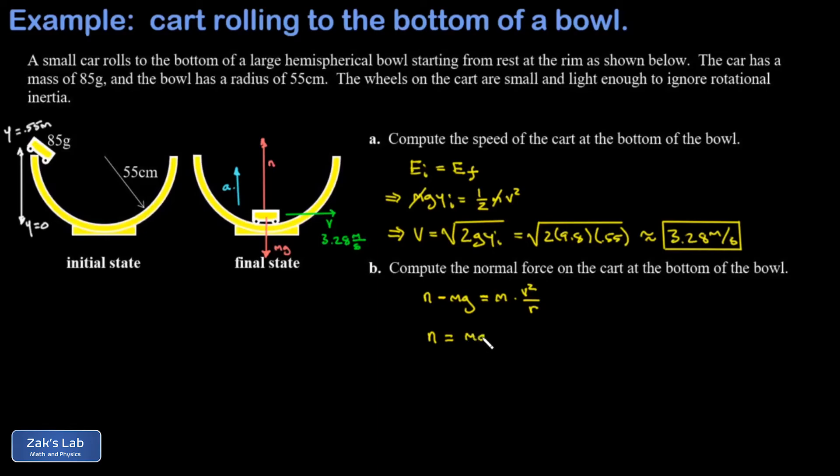I get n is equal to mg plus mv squared over r. We'll go ahead and factor the m out of this to get a nice symbolic solution. That's m times the quantity g plus v squared over r.